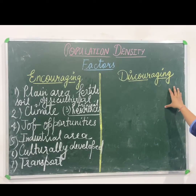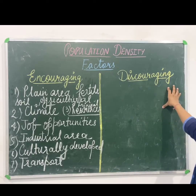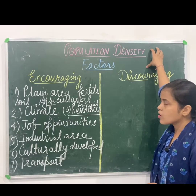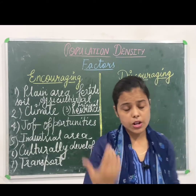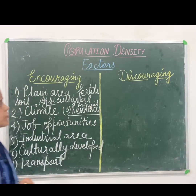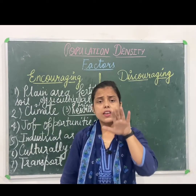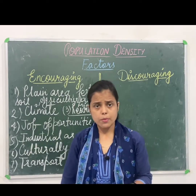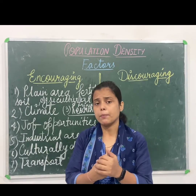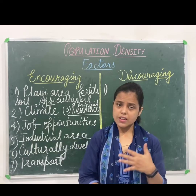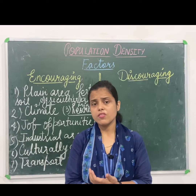Now the next thing is discouraging factors. Discouraging factors are in negative terms — they cause less or low population density at a place. The first discouraging factor is climate. For example, we live in Uttar Pradesh where we experience all types of climate: summer, rainy, winter, autumn, and spring — the best mix of all climates.